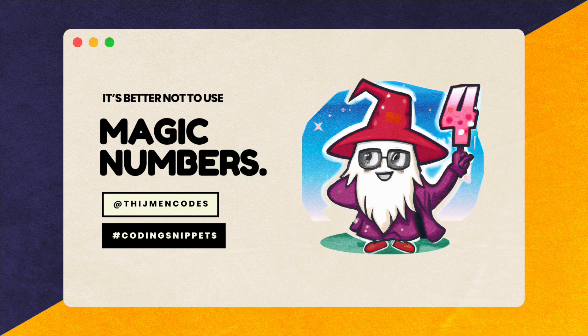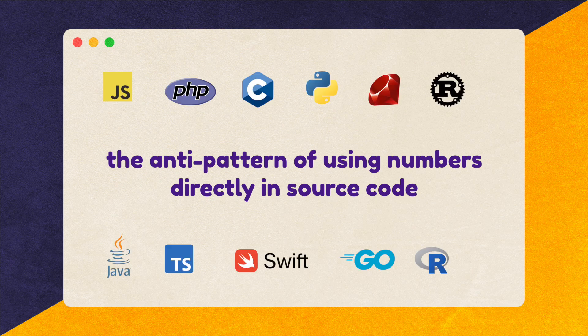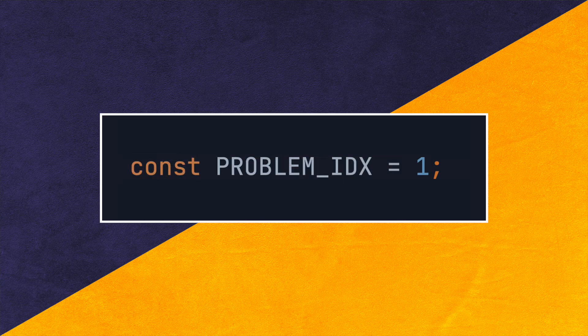Hey everyone, Tymon here. In this video I will demonstrate how you can make your code more self-explanatory by discouraging the use of magic numbers, and explain why they are long considered to be a bad practice in programming. The term magic number is not unique to any programming language and refers to the anti-pattern of using numbers directly in source code without a proper explanation of their meaning. The first problem with the use of unnamed numeric literals in code is that it obscures the developer's intent in choosing that number.